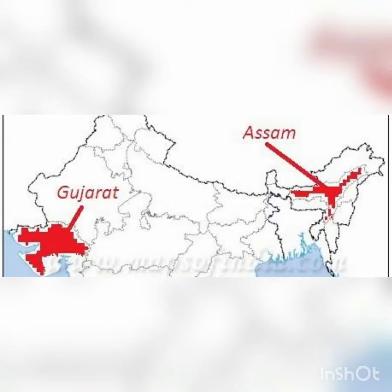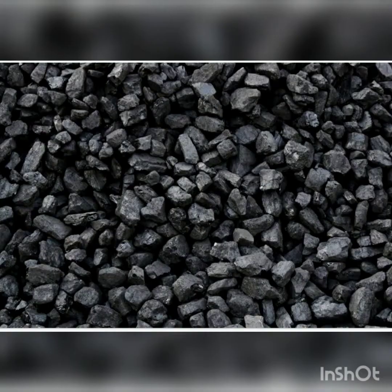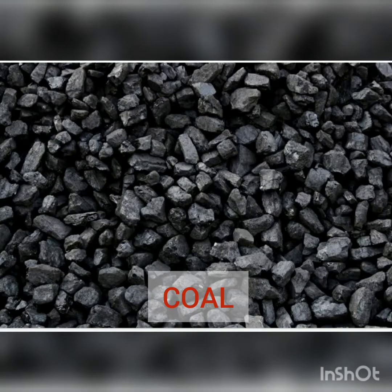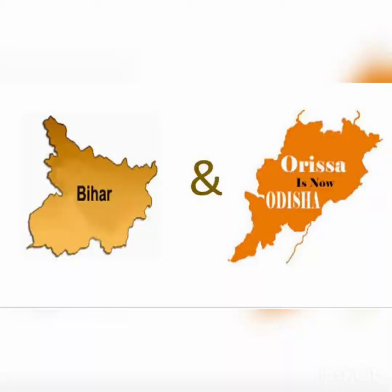Coal. Coal is a hard rock which can be burned as a solid fossil fuel. Bihar and Odisha are the main coal producing regions.